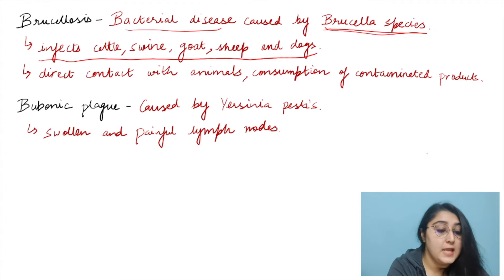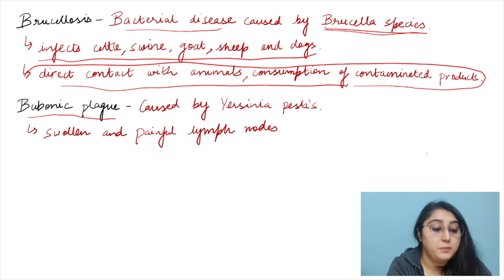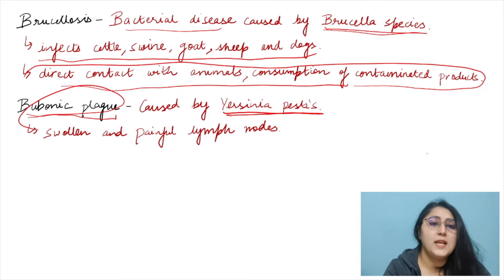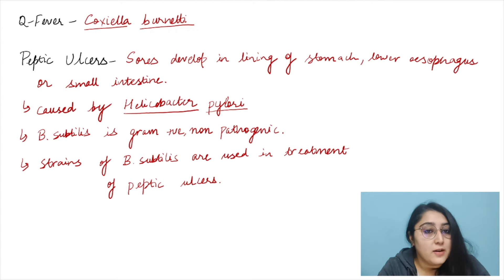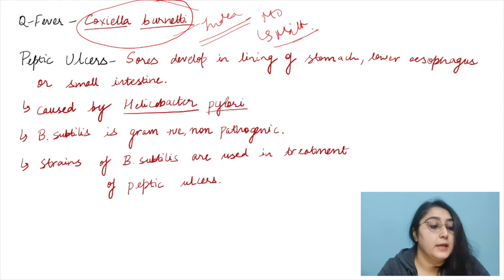Bubonic plague is caused by Yersinia pestis — a gram-negative species — and is characterized by swollen, painful lymph nodes at the site of bacterial entry. Q fever is caused by Coxiella burnetii, which is also the index microorganism for pasteurization of milk.